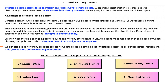We can decide how many database objects we want to create — like a single object or ten database objects — as per our application requirement. This gives us control over object creation. Important examples of creational design patterns include: Singleton pattern, Factory Method pattern, Abstract Factory pattern, Prototype pattern, Builder pattern, and Object Pool pattern.